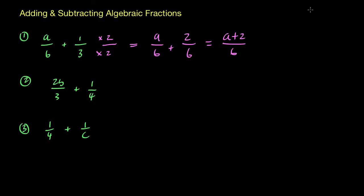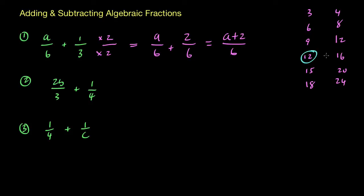The multiples of 3 are: 3, 6, 9, 12, 15, 18... and for 4 we've got 4, 8, 12, 16, 20, 24. What you need to see is that 12 exists on both lists, and that's great because all we need to do now is multiply 3 by 4 to get to 12.